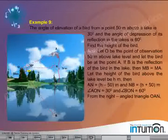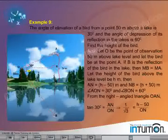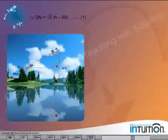From the right-angled triangle OAN, tan 30 degrees is equal to AN by ON, which implies 1 by root 3 is equal to h minus 50 divided by ON, which implies ON is equal to root 3 into h minus 50. Equation 1.